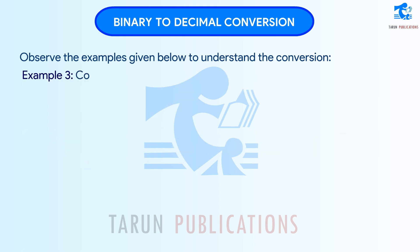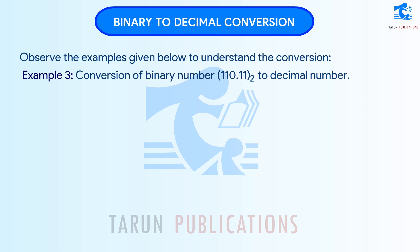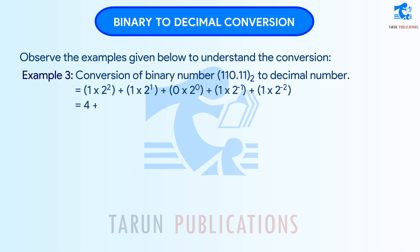Example 3: Conversion of binary number 110.10 base 2 to decimal number. Is equal to 1 times 2 to the power 2, plus 1 times 2 to the power 1, plus 0 times 2 to the power 0, plus 1 times 2 to the power minus 1, plus 1 times 2 to the power minus 2. This equals 4 plus 2 plus 0 plus 0.5 plus 0.25, which is equal to 6.75.